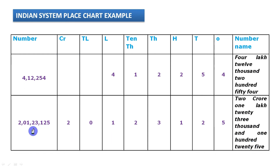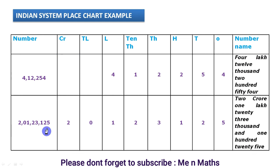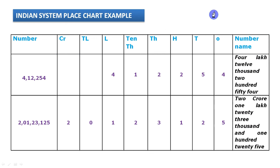We can easily read eight or nine digit numbers without memorizing period positions — just use commas. Remember: one comma means start from thousands, two commas from lakhs, three commas from crores. I hope you understand the Indian system of numeration. See you in the next video — bye bye!